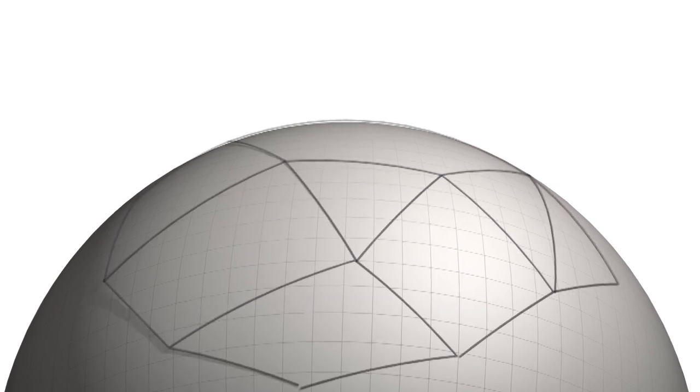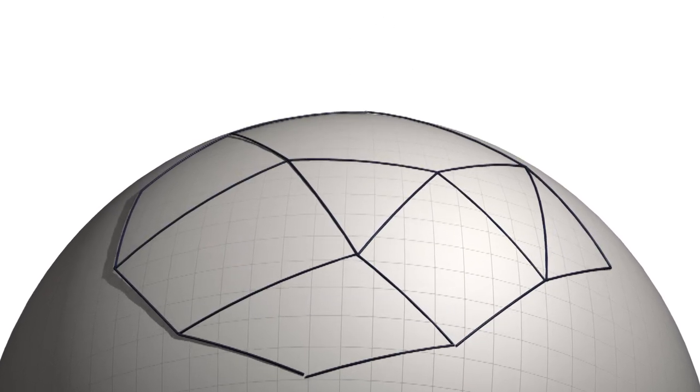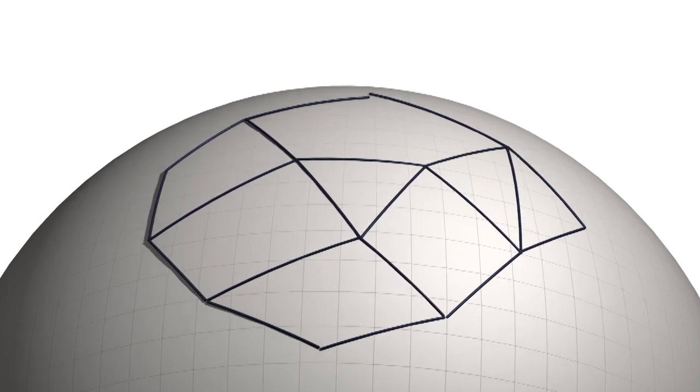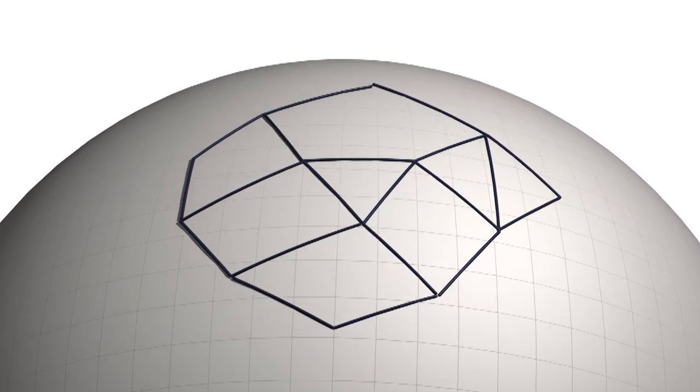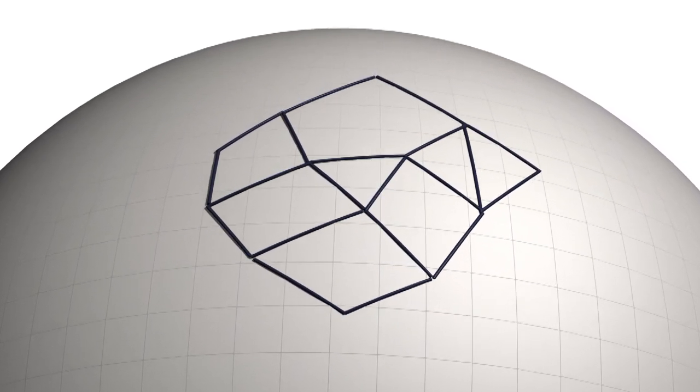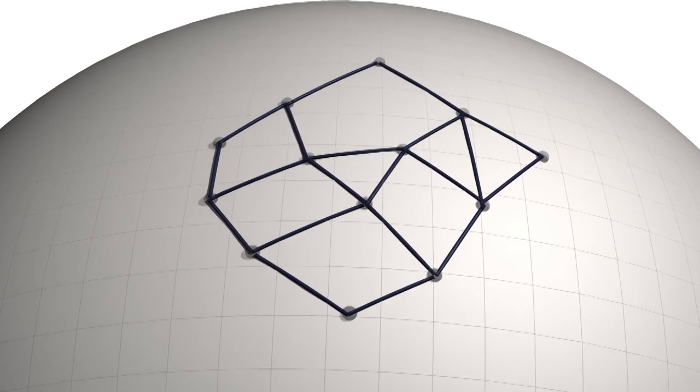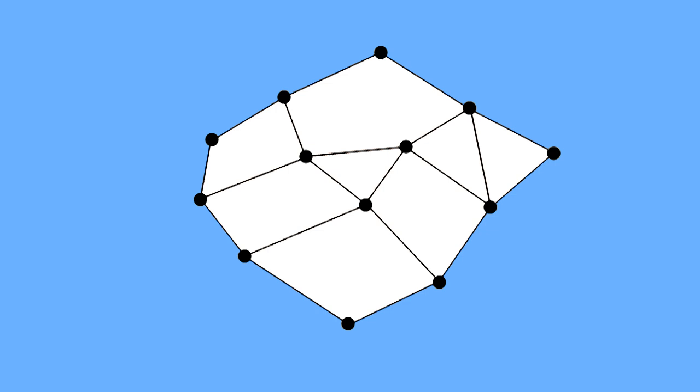To prove this, let's start with any connected graph drawn on a sphere. Now we can make one of the faces really big so it covers most of the sphere, and then just flatten things out so we're dealing with a graph on a plane. I will color the outside face blue and the inside faces brown.